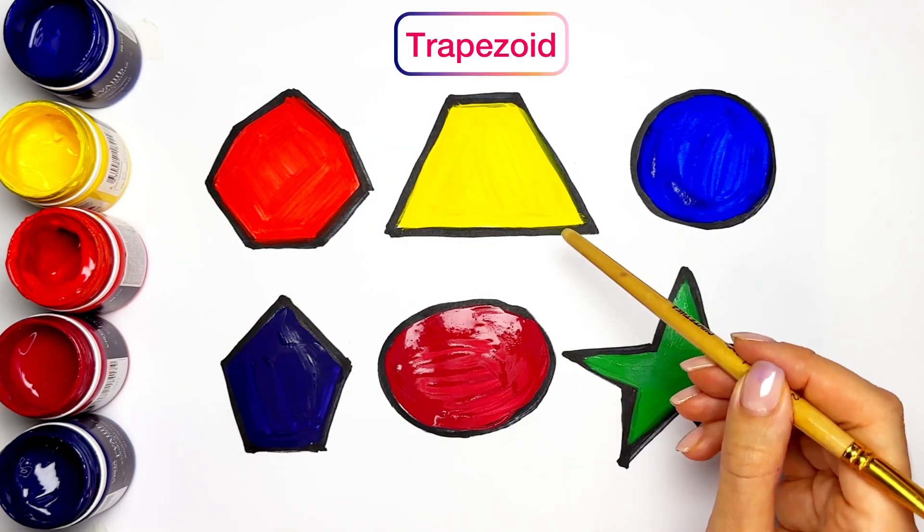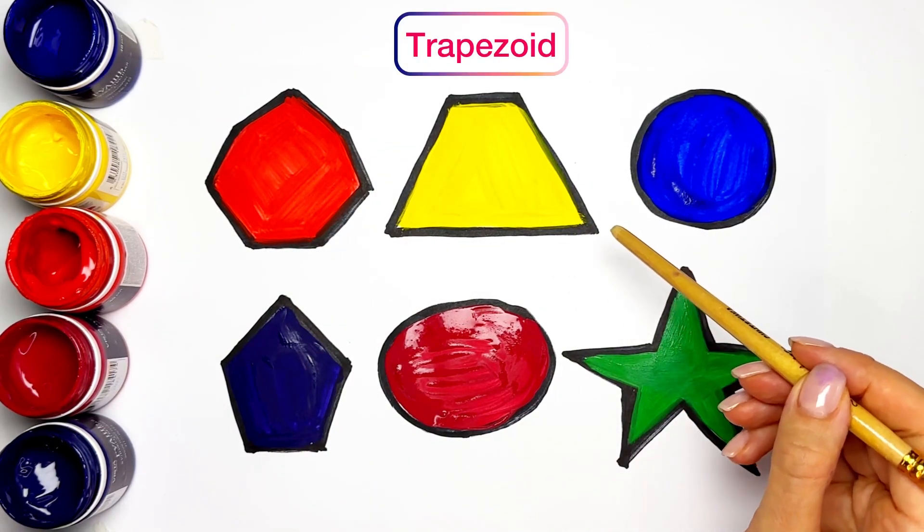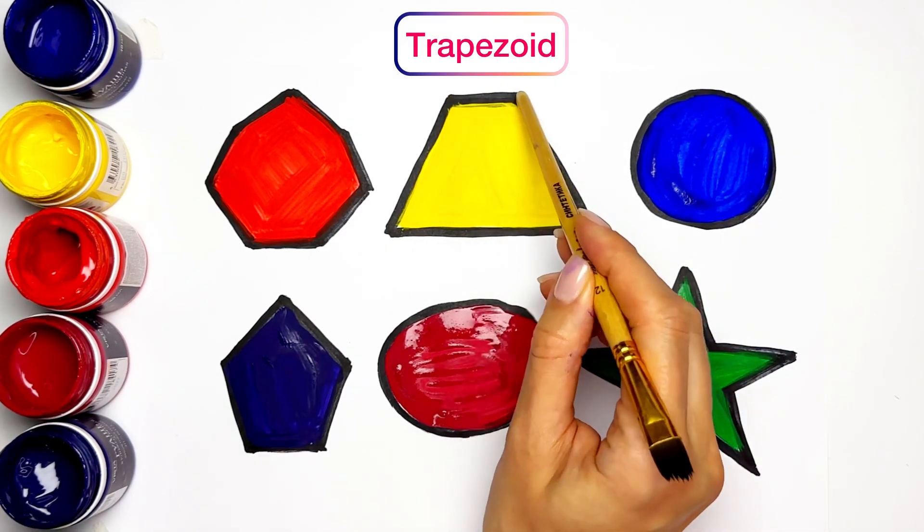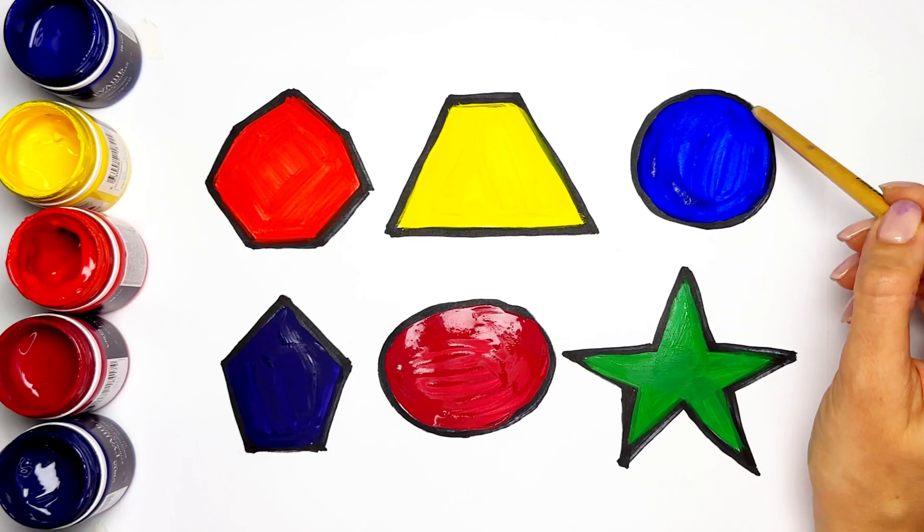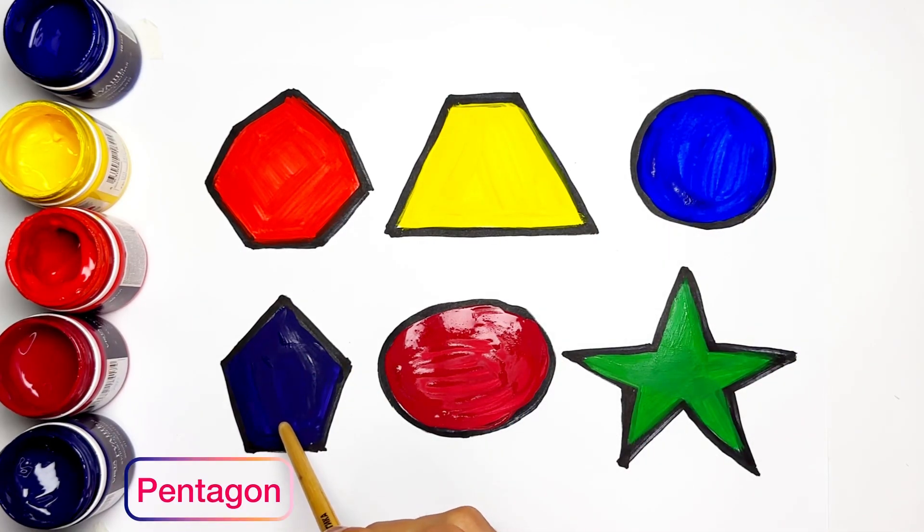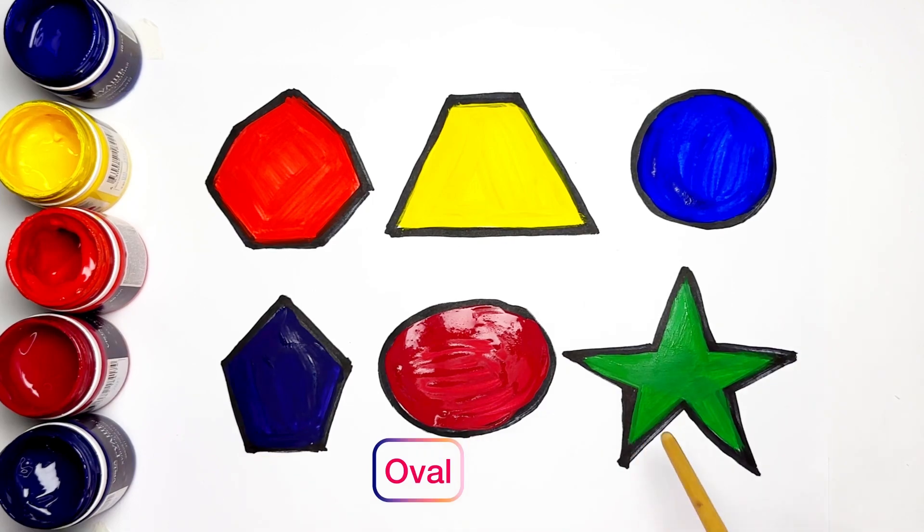Trapezoid has 4 angles. Looks like a square but very small. Circle. Blue circle. Purple pentagon. Red color. And the green Star.